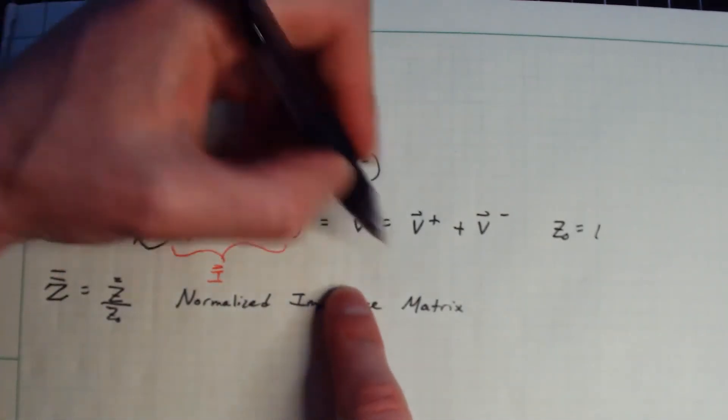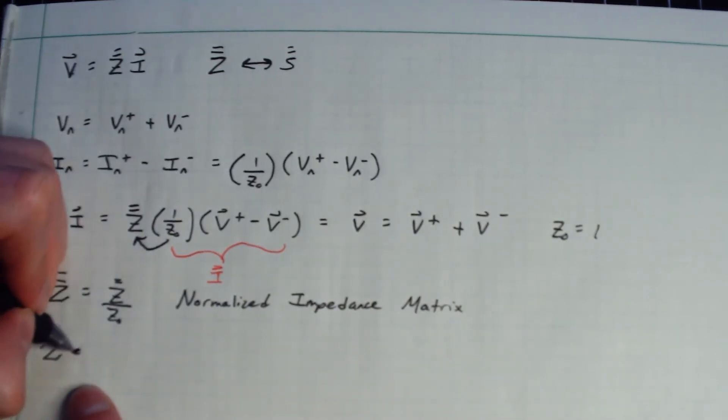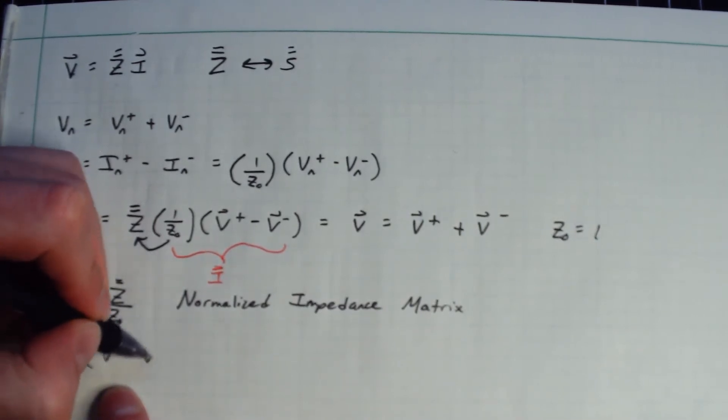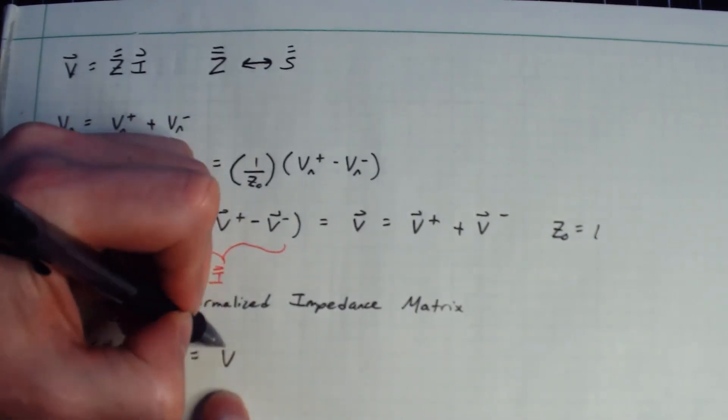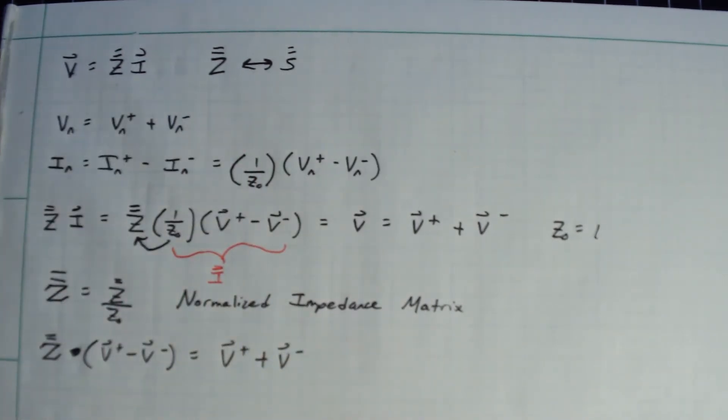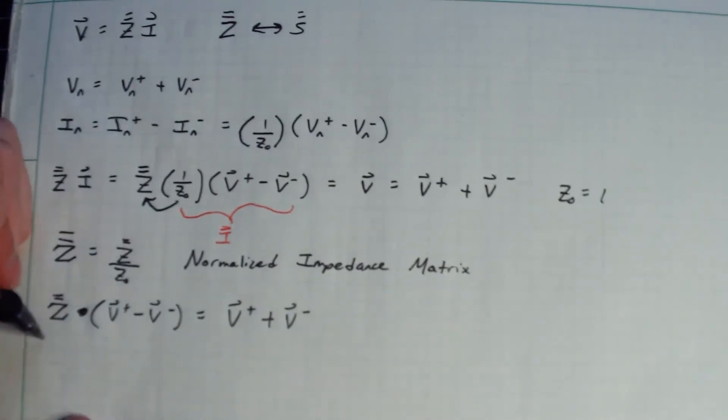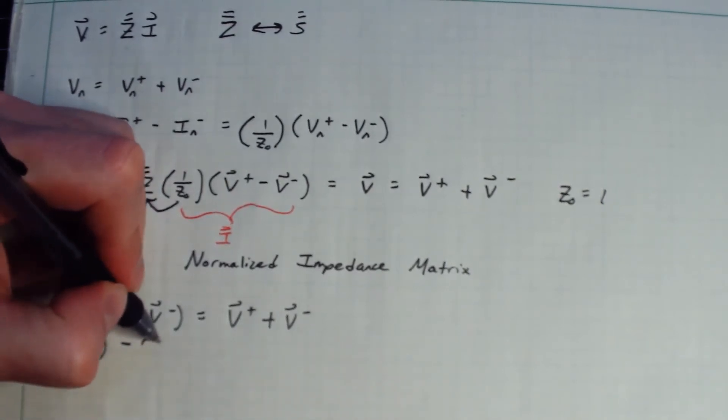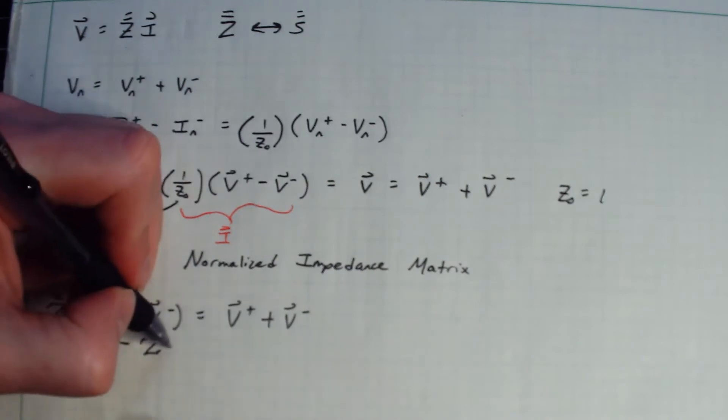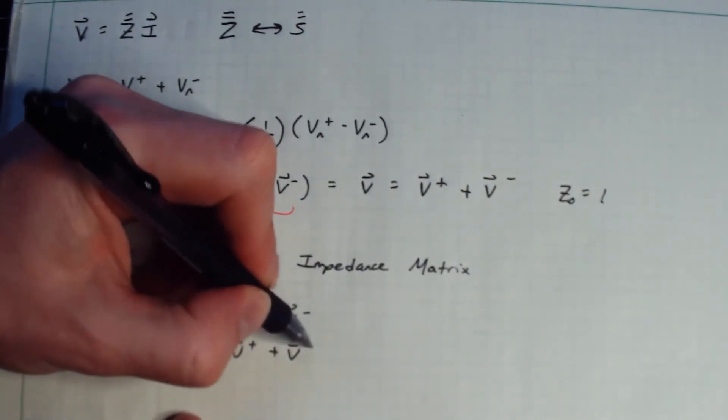Okay, so essentially, I'm just going to, let's just rewrite this real quick. My fancy Z times my V plus minus V minus is equal to V plus plus V minus like so. So all I'm going to do is rearrange my terms a little bit. So what you get is, let's move this a little. I will have fancy Z times V plus minus fancy Z, the normalized impedance, times V minus is equal to V plus plus V minus.